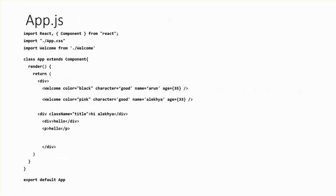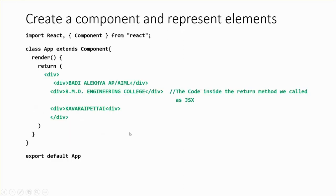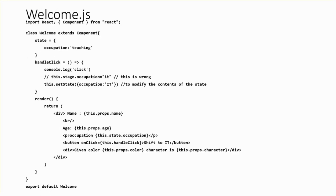In this component we are going to understand what are states and props. If you observe this code, here state is equal to — if I want to specify some variables, if I want to represent specific variables in my browser, I can represent them in the form of state. The syntax for creating a state in React is: state equals, open flower braces, and I am giving occupation as 'teaching'.